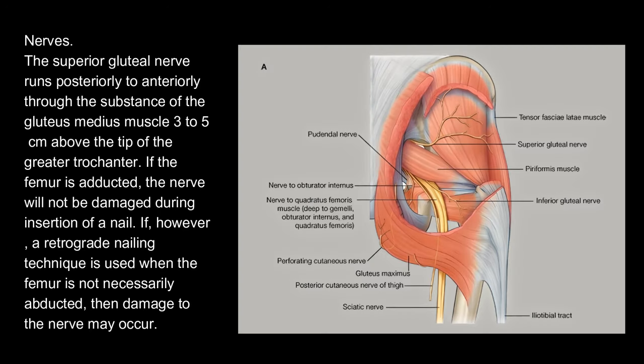Nerves. The superior gluteal nerve runs posteriorly to anteriorly through the substance of the gluteus medius muscle 3–5 cm above the tip of the greater trochanter. If the femur is adducted, the nerve will not be damaged during insertion of a nail. However, if a retrograde nailing technique is used when the femur is not necessarily adducted, then damage to the nerve may occur.